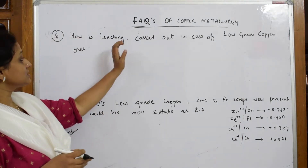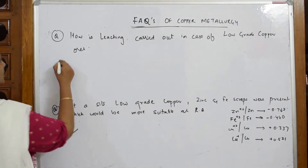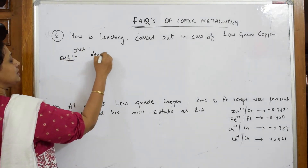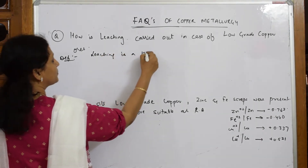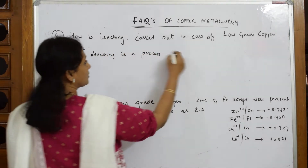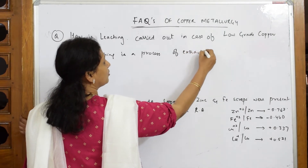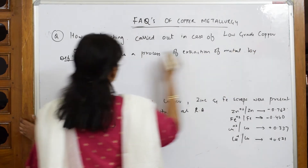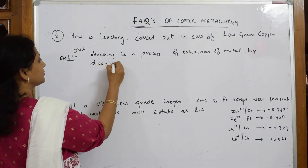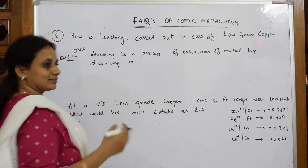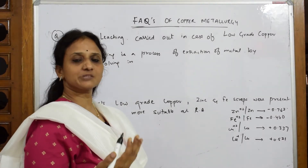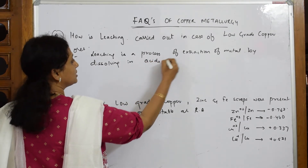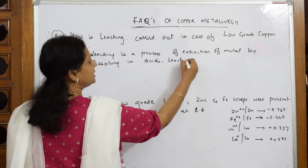Now, first when answering this question, try to write the definition of leaching. Leaching is a process of extraction of a metal by dissolving it in a metal-specific leaching agent — dissolving in acids or dissolving in leaching agents.